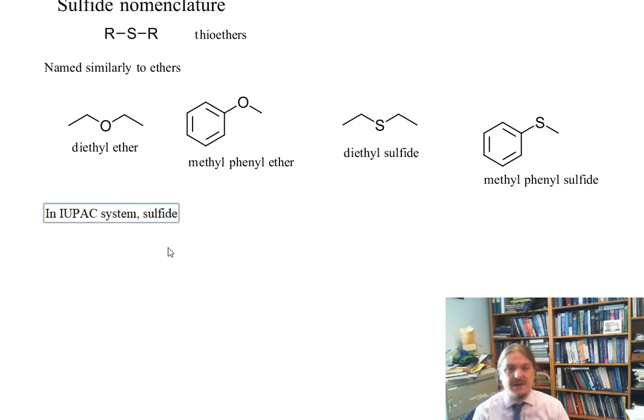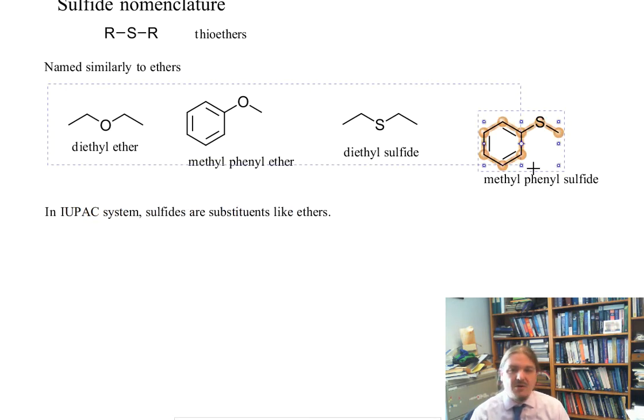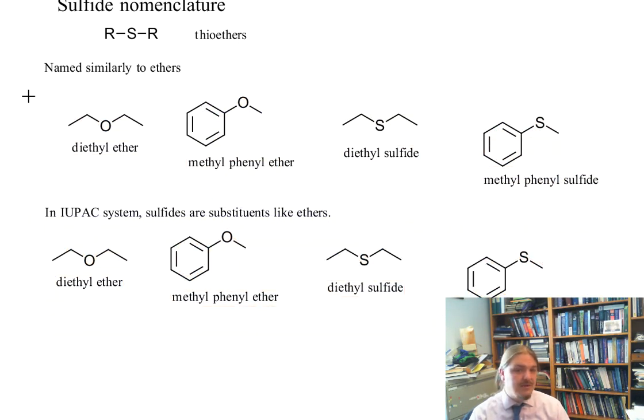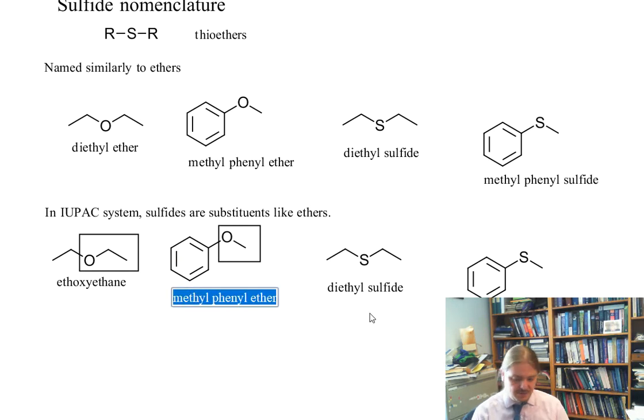Just like ethers, in an IUPAC system, sulfides are substituents. So if we take all four of these compounds, ethers and sulfides, and rename them according to the IUPAC system, diethyl ether becomes ethoxyethane. Part of it becomes the ethoxy substituent. Part of the methylphenyl ether becomes methoxybenzene. The smaller side becomes the methoxy substituent.